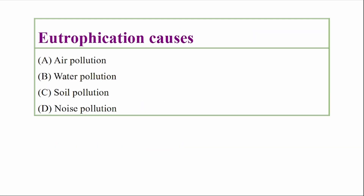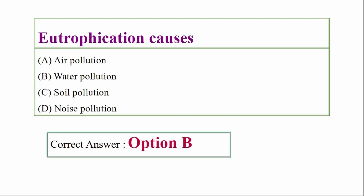Eutrophication causes — options: air pollution, water pollution, soil pollution, noise pollution. Answer option B: water pollution.